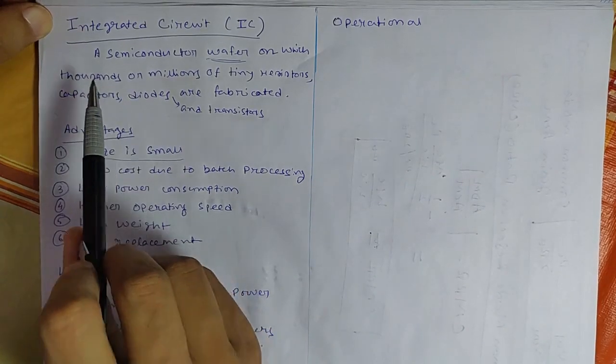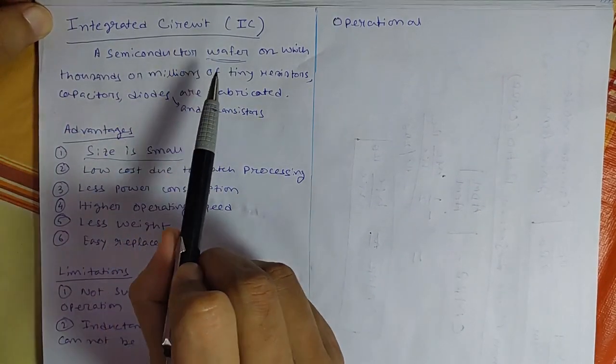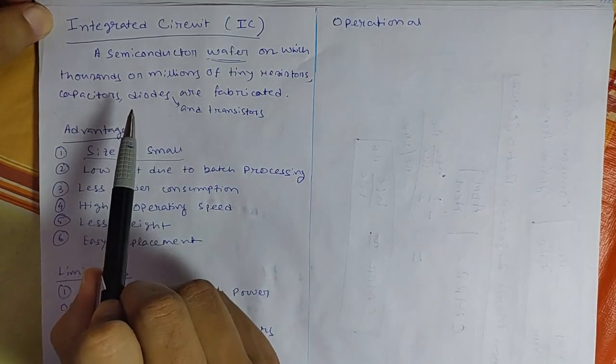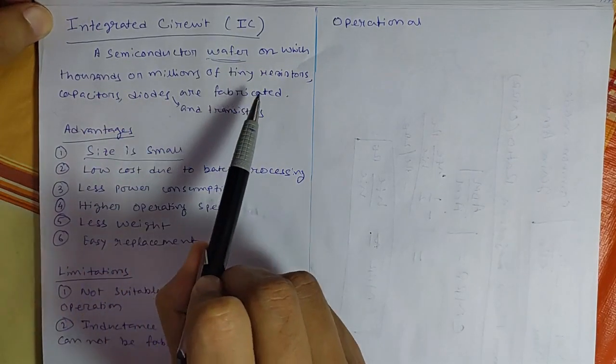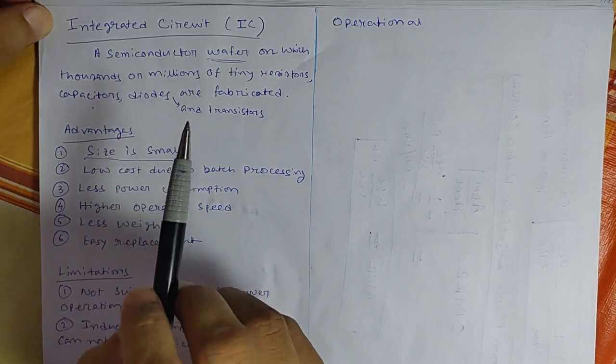A semiconductor integrated circuit is a semiconductor wafer on which thousands or millions of tiny resistors, capacitors, diodes and transistors are fabricated.